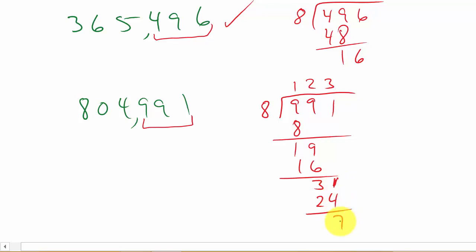So you can see in this problem that we have a remainder. And since 8 does not divide into the last three digits evenly, then that means 8 does not divide into that number evenly.